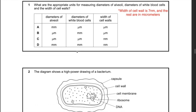Question 15: what are the appropriate units for measuring diameters of alveoli, diameters of white blood cells, and the width of cell walls? A key thing to note is that the width of a cell wall is 7 nanometers, so it should be measured in nanometers. The diameters of both alveoli and white blood cells are measured in micrometers. Hence the best answer is C.